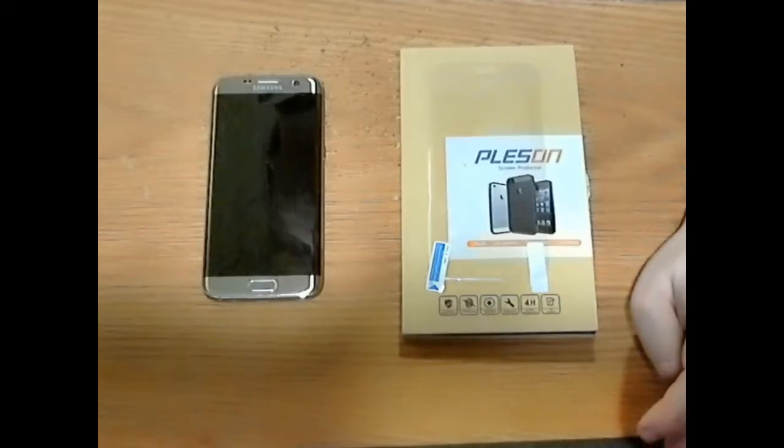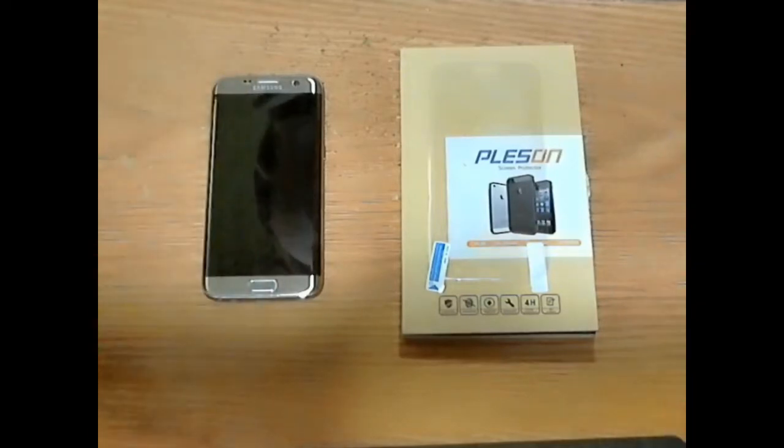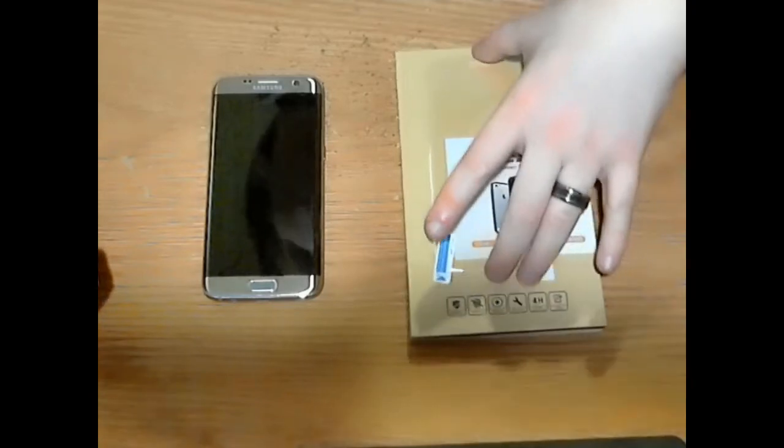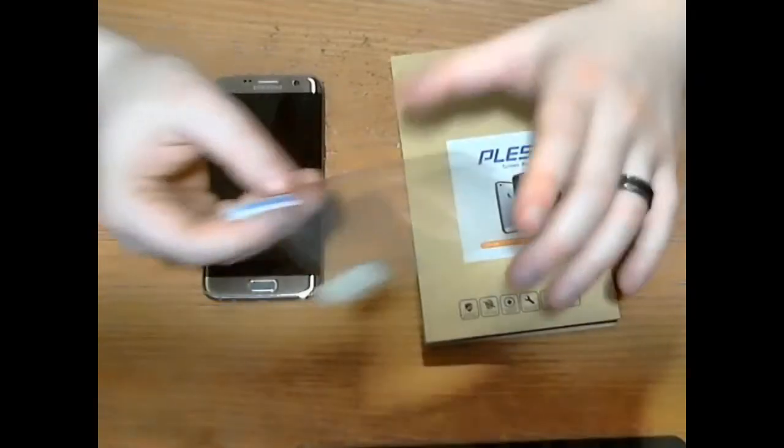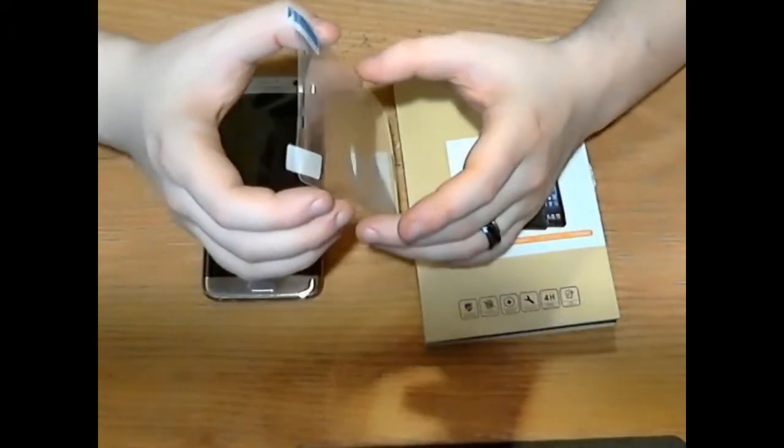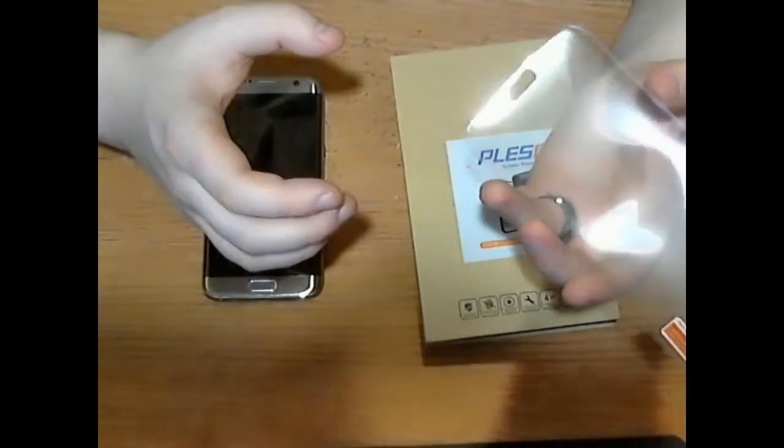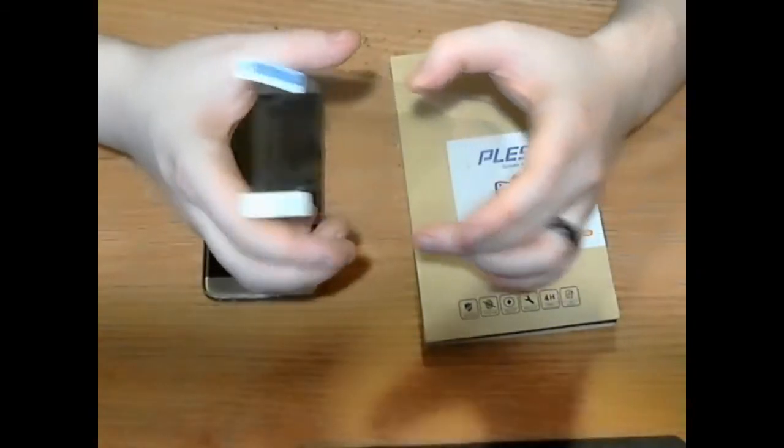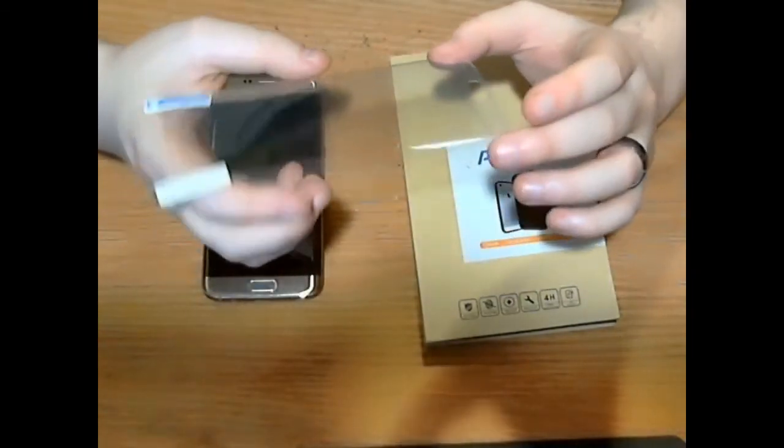This time I'm bringing you a review on a Galaxy S7 Edge screen protector. I've done a couple of these in the past. This is actually the first one I'm reviewing that is a film-type screen protector. This one is by Plessen, a 3D curved type protector that covers the entire front of the phone.